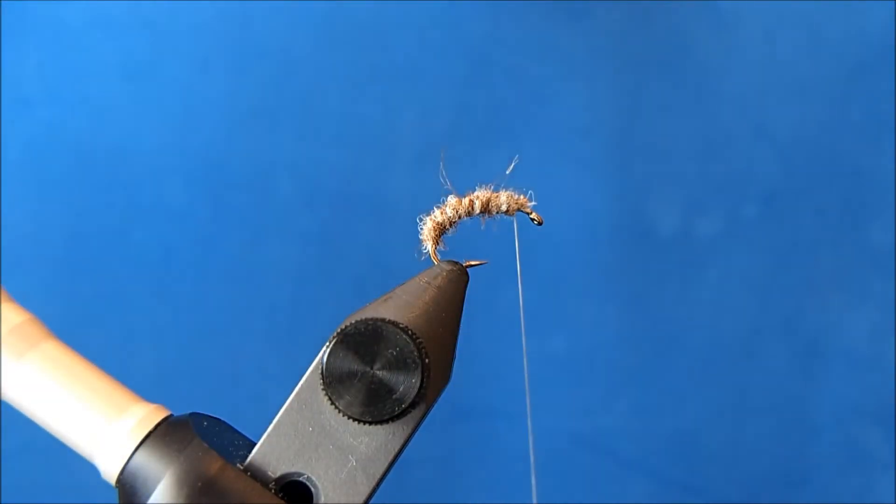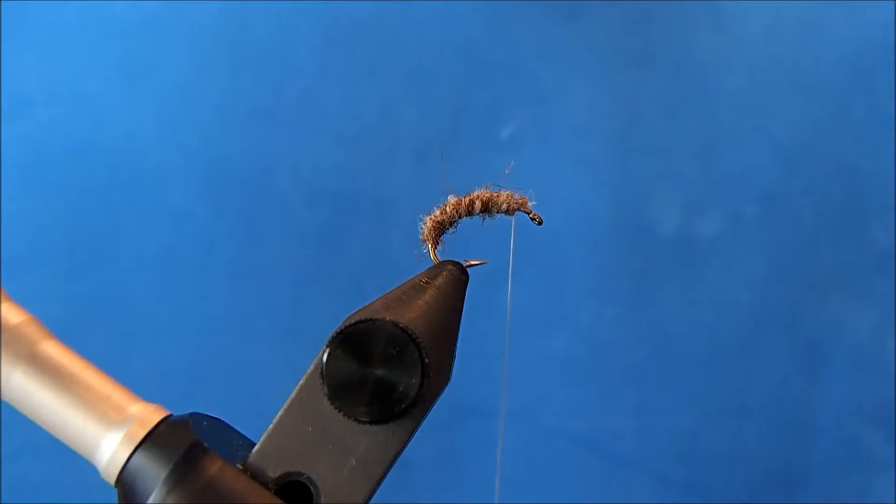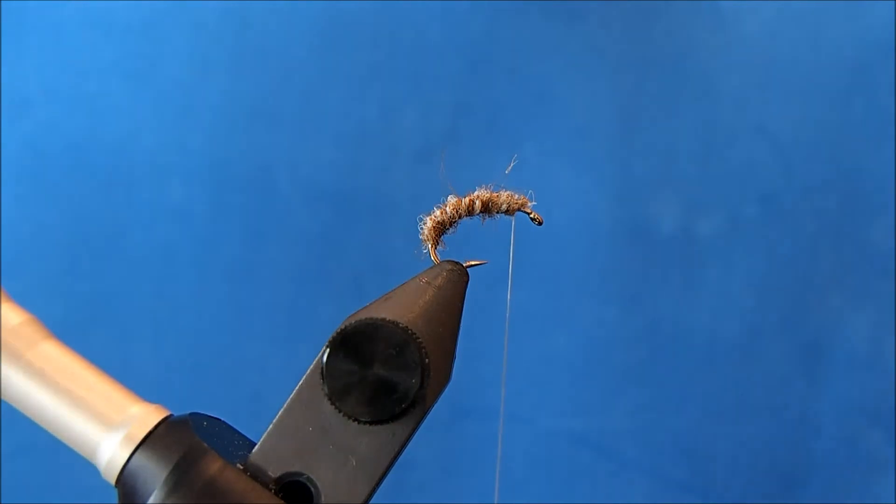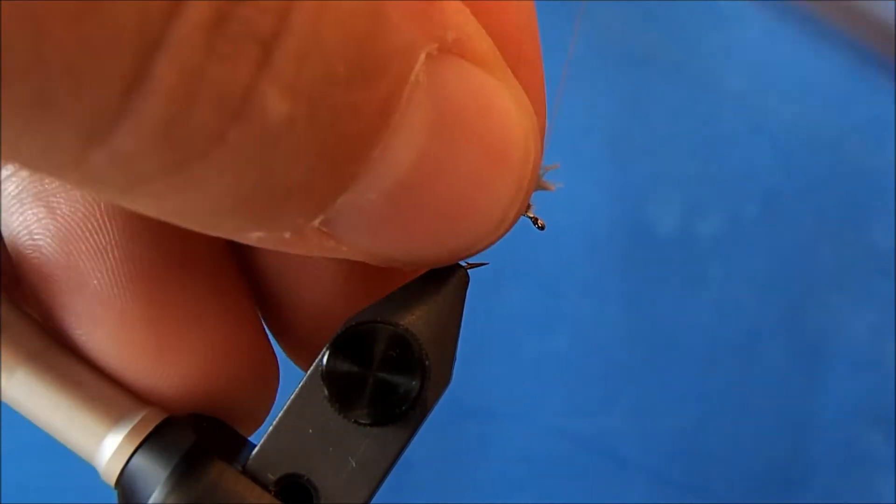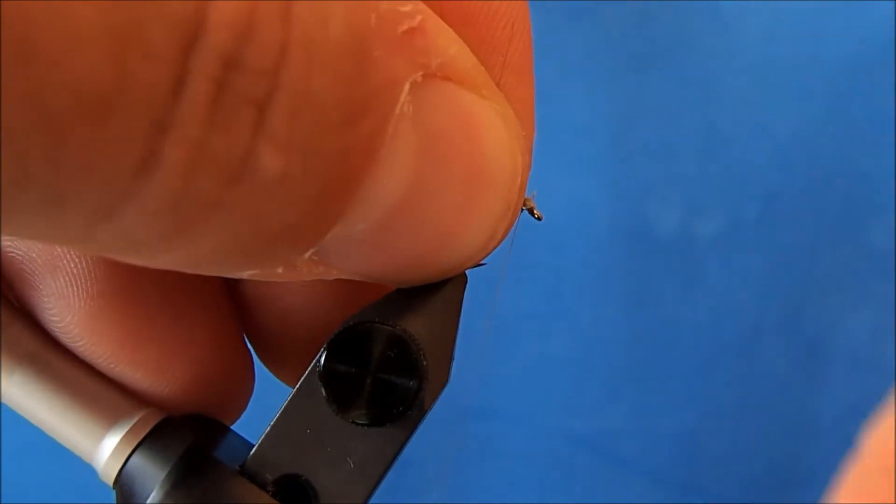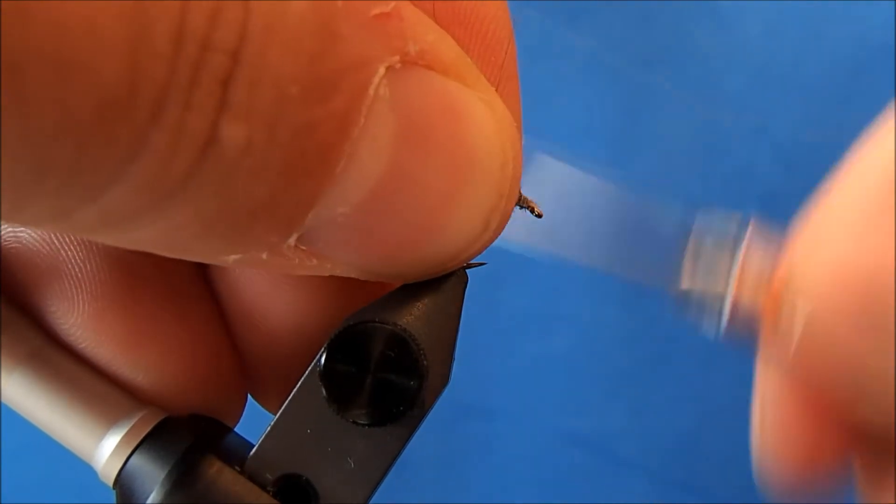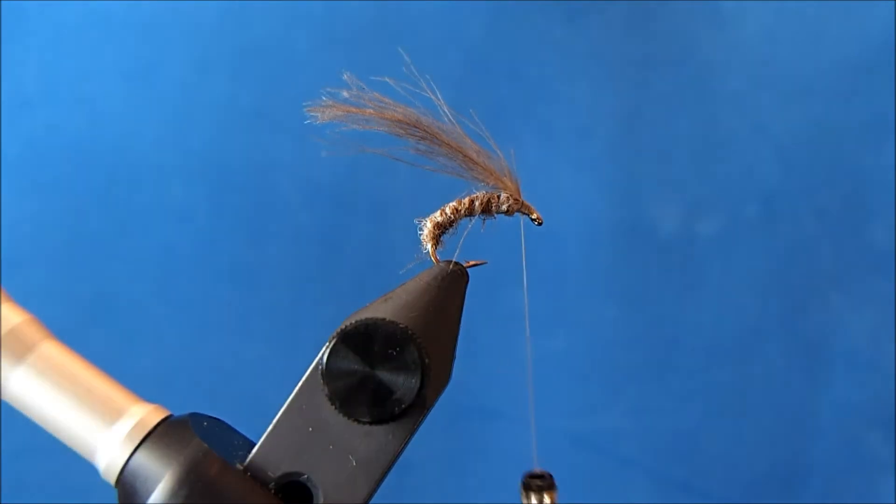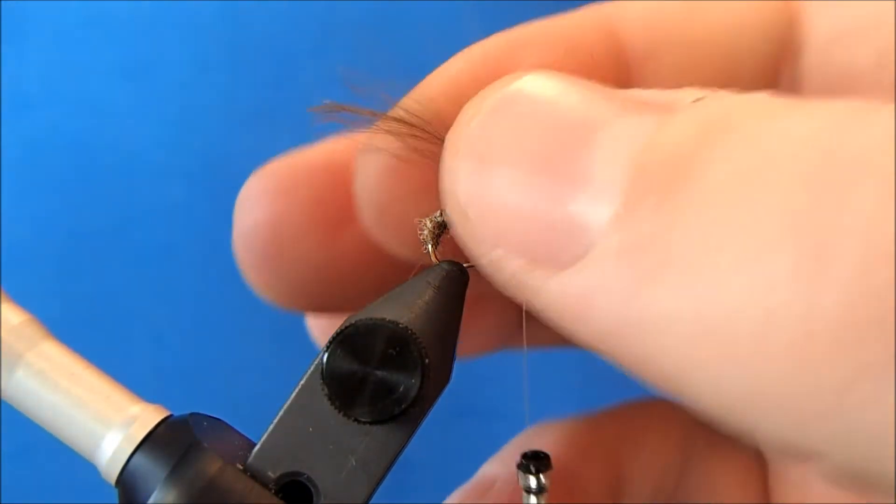Now I'm going to add in my CDC. I'm going to tie this in by the stem. So I'll clip just a bit of it and tie that in. And now I'm going to attach my hackle pliers to the tip of this.